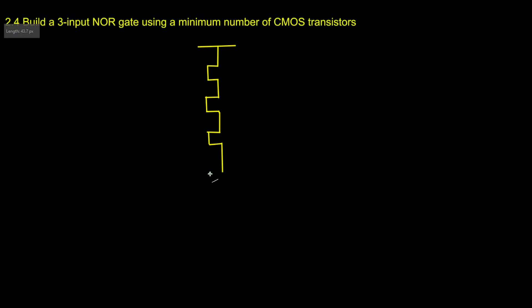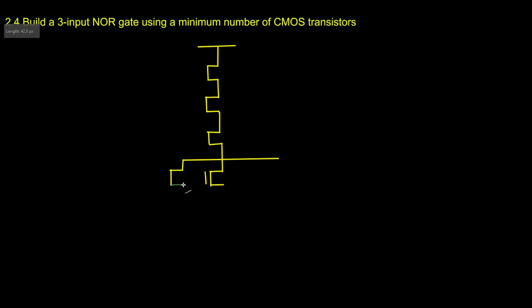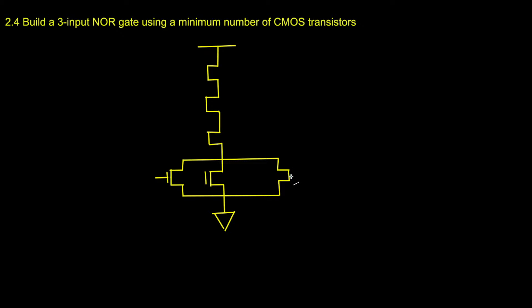Now I am going to put 3 NMOS in parallel. You can put them all on one side or connect them as you want, but the only thing you have to consider is that they should be in parallel. This one is connected to ground and this is VDD.